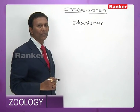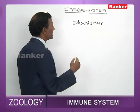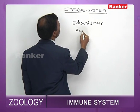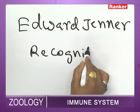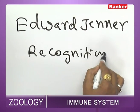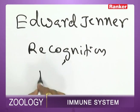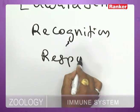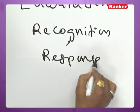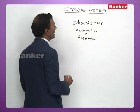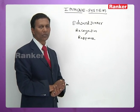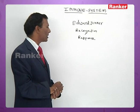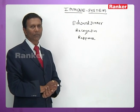The main objectives of the immune system are recognition and response. Recognition and response are the most important objectives of the immune system.